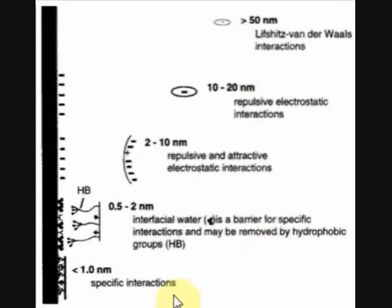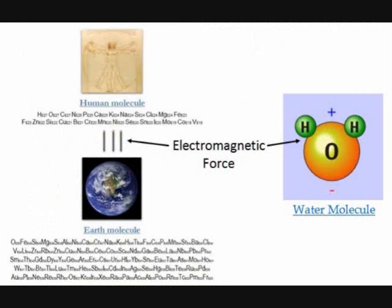By extrapolating this model upward to the scale of humans attached to the Earth, we note that both the human, which can be defined as a 26-element molecule, and the Earth, which can be defined as a 92-element molecule, can be described as being attached by the electromagnetic force, the same force that attaches the hydrogen atom to the oxygen molecule. Thereby, given further time, it should be possible to synthesize a chemical gravitational formulation of gravity.